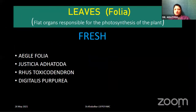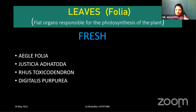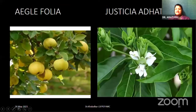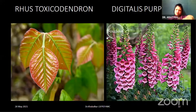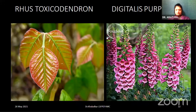Then we have the leaves, also known as folia — flat organs responsible for photosynthesis, the very important essential mechanism of the life of a plant. For fresh leaves, the first drug is Aegle folia — a highly religious drug. Then Justicia adhatoda. Then Rhus toxicodendron — red leaves; you can remember it beautifully. Then Digitalis purpurea, the fox glove. You can see how these flowers are just like gloves — Digitalis purpurea.